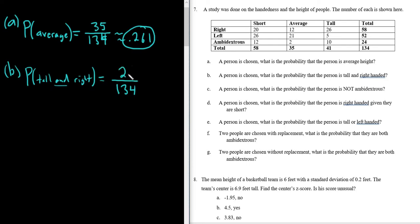So 26 ways to pick someone that is tall and right-handed, 134 ways to pick someone. Divide those, and you get the probability, which is approximately 0.194. Again, it's where they meet. You see where right meets tall on the chart, so 26. All right, whoops, I wrote on the document there. There we go.